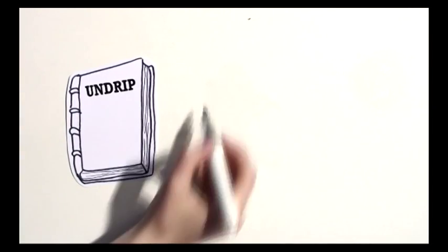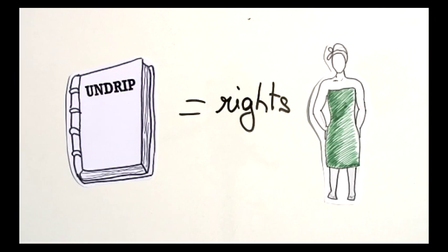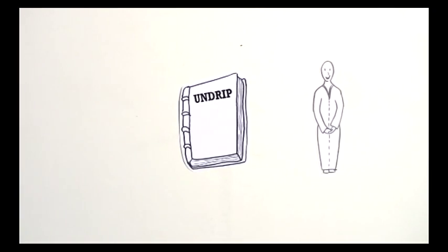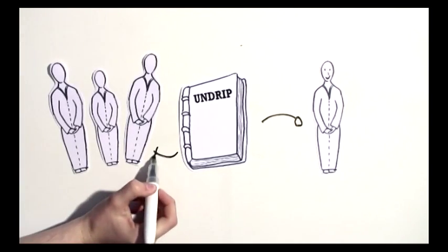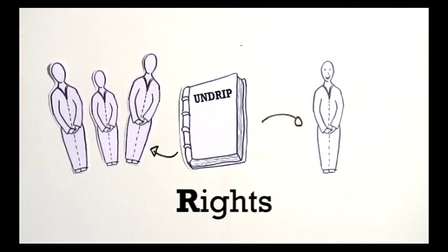This document describes what rights Indigenous Peoples should have. The declaration recognizes Indigenous Peoples as distinct peoples and also as a community who have the right to self-determination.